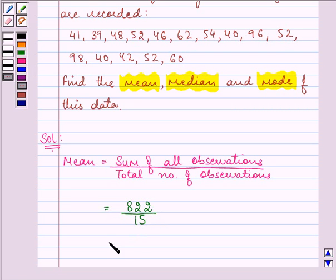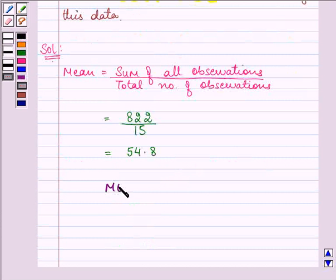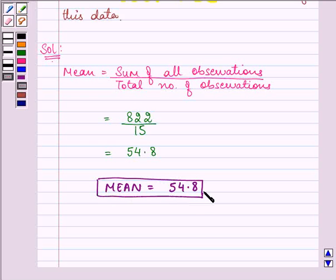It will get divided by 15 and further the answer will be 54.8. So the mean of this data is equal to 54.8. That means on average the students are scoring 54.8 marks in the test.